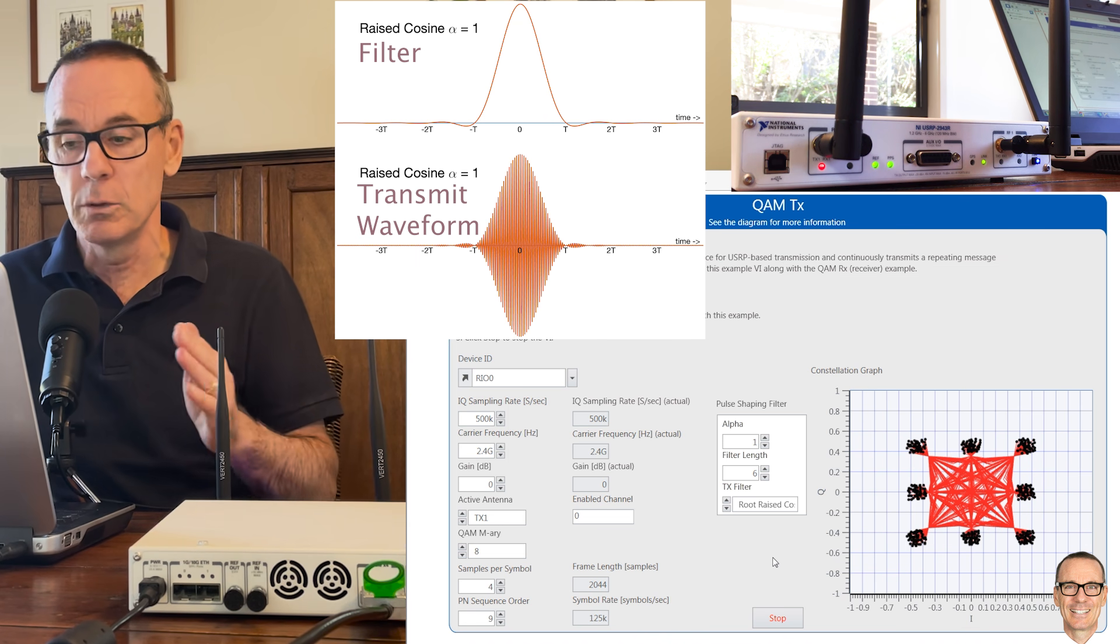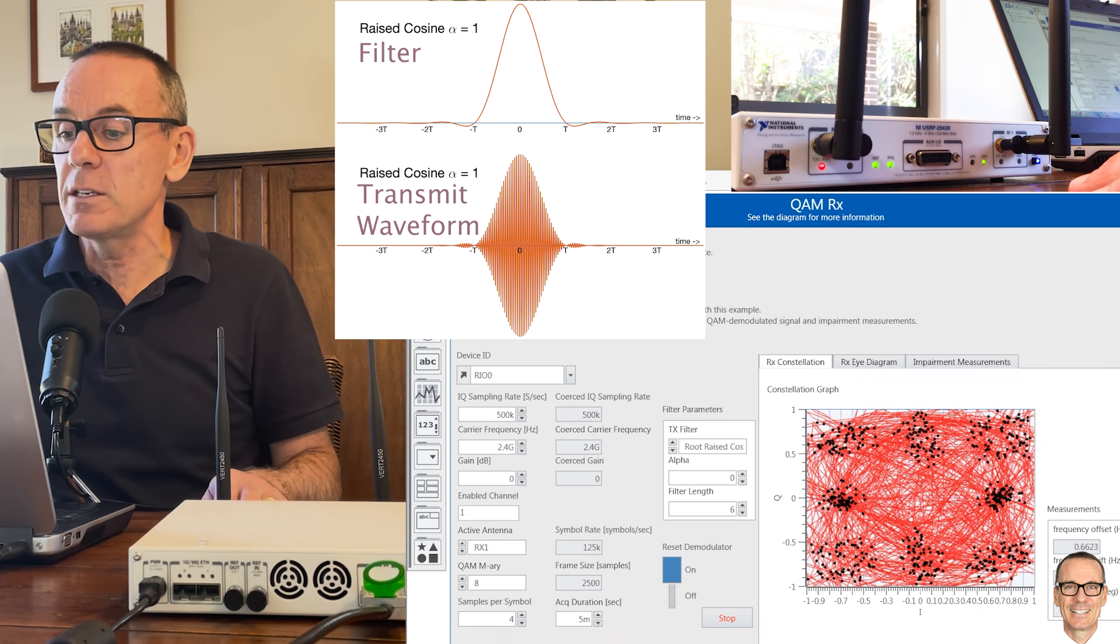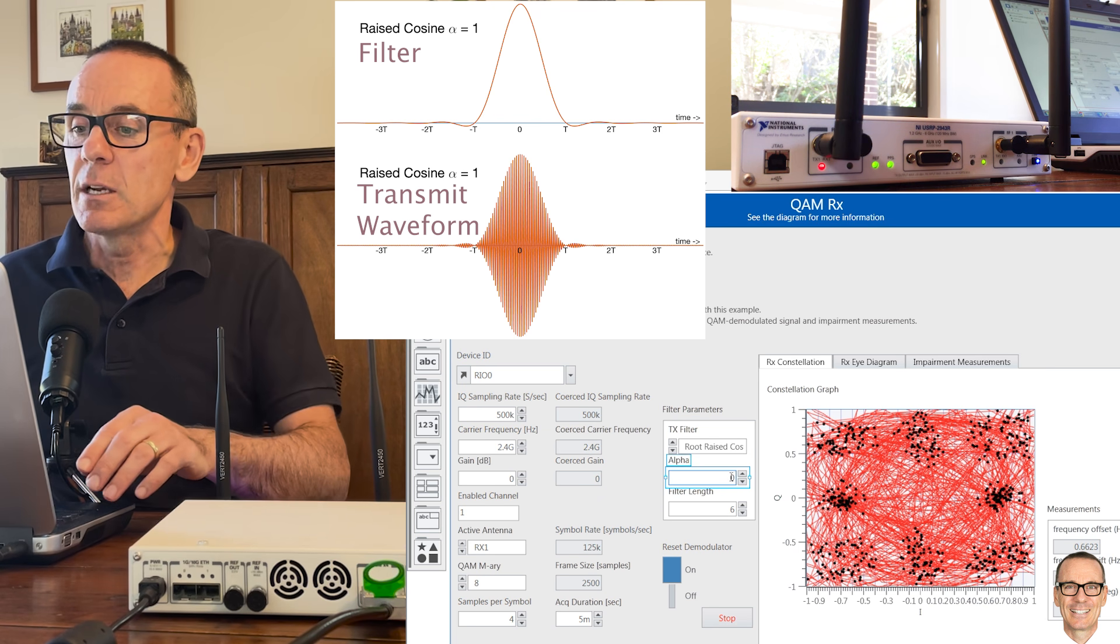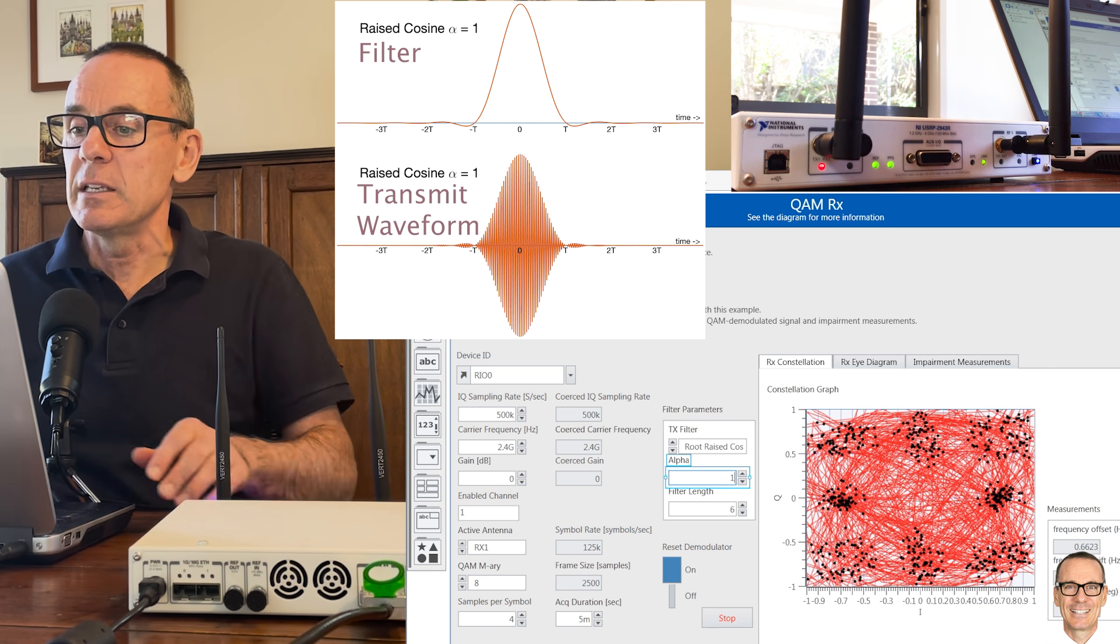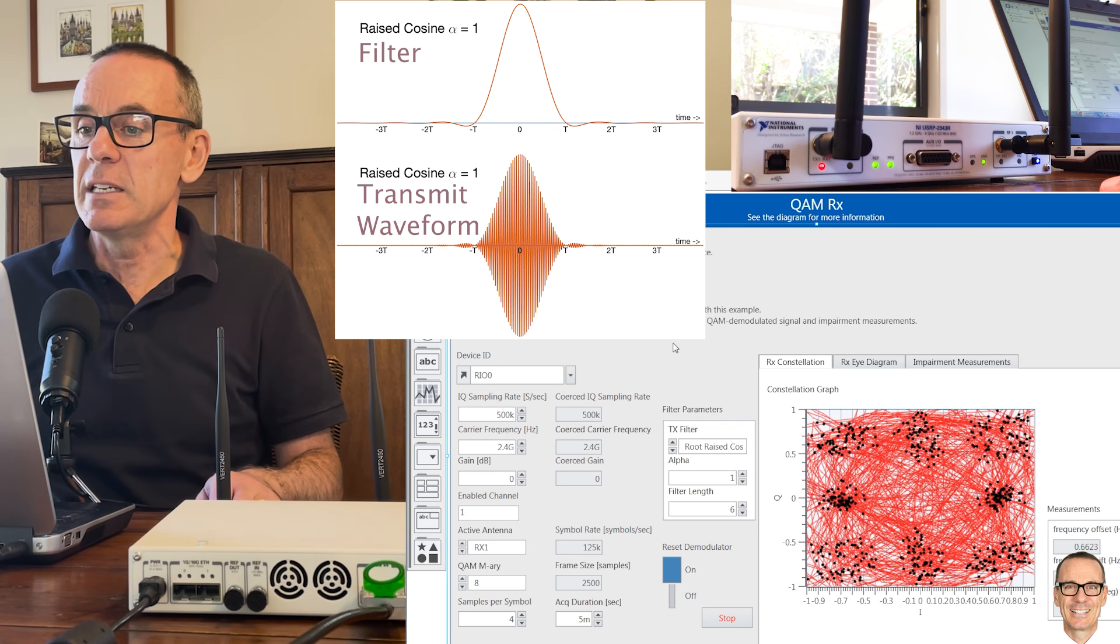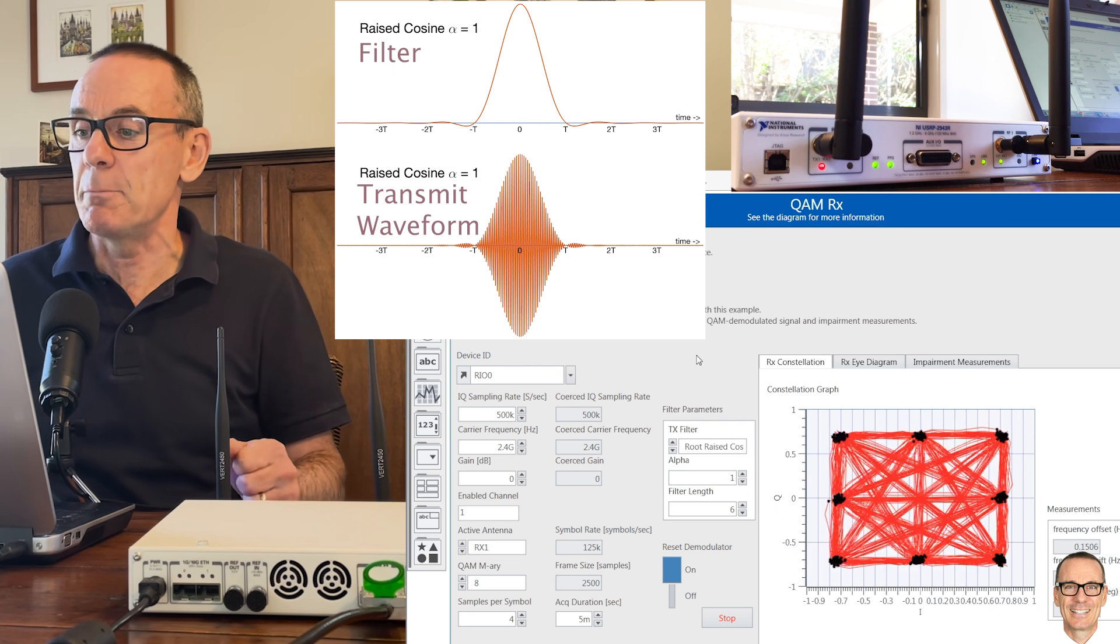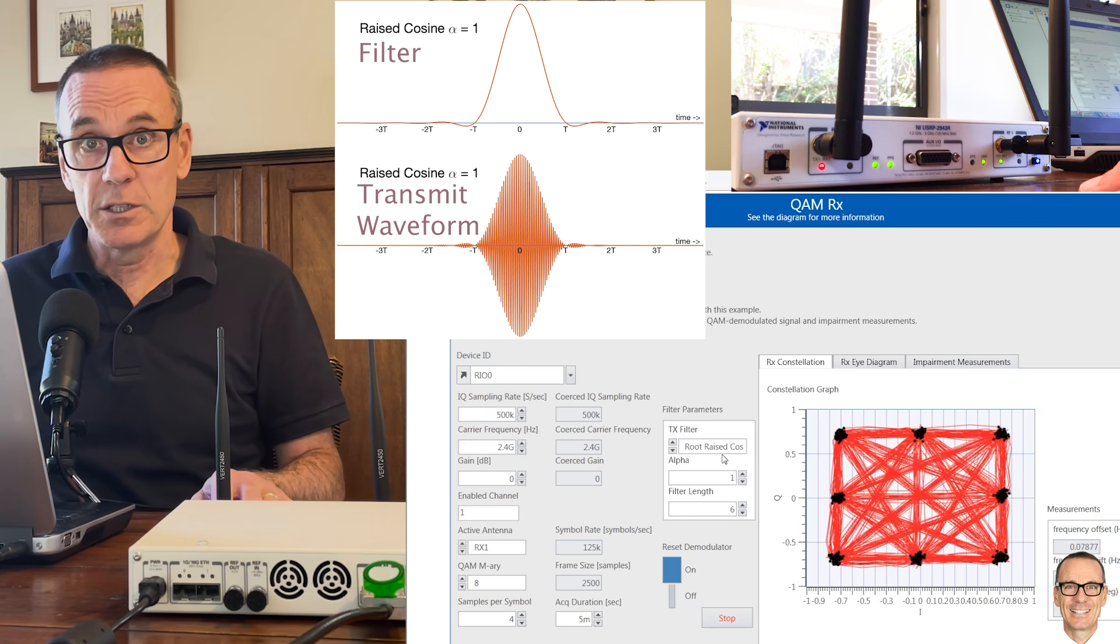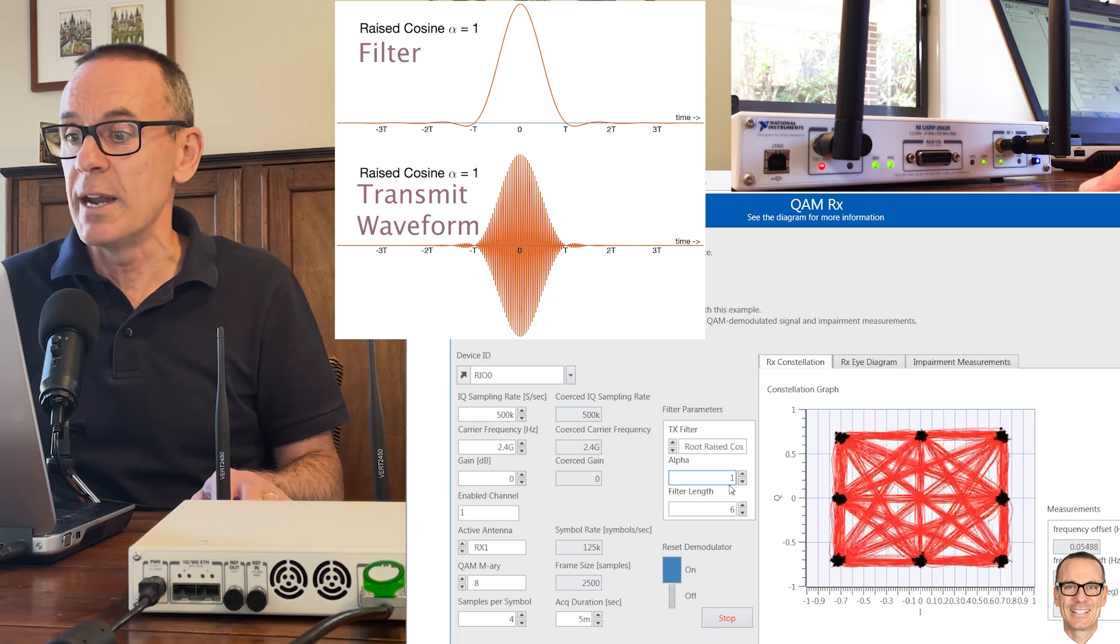The actual determining factor is once it's gone through the transmit filter and the receive filter. So let's turn the receiver on and give it an alpha equals one and then let's see what the effect is here as it loads and we'll see the reception now. So here's the receive constellation diagram when you're using a root raised cosine filter and alpha equals one.